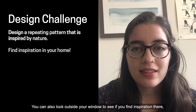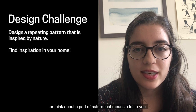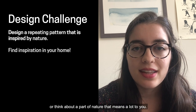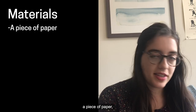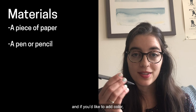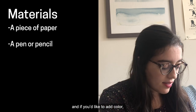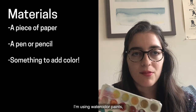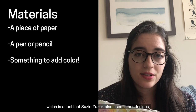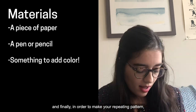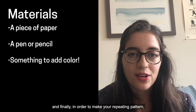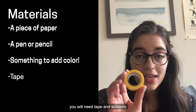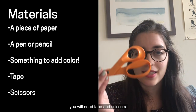You can also look outside your window to see if you find inspiration there, or think about a part of nature that means a lot to you. Let's start by gathering our materials. To design today, we will need a piece of paper, a pen or pencil, and if you'd like to add color, you can find something that will help you do this. I'm using watercolor paints, which is a tool that Susie Zuzek also used in her designs. And finally, in order to make your repeating pattern, you will need tape and scissors.